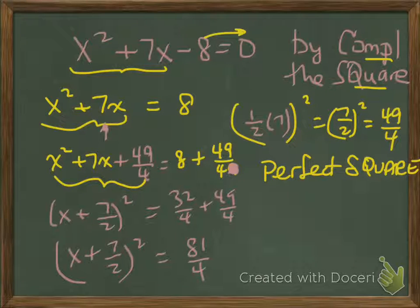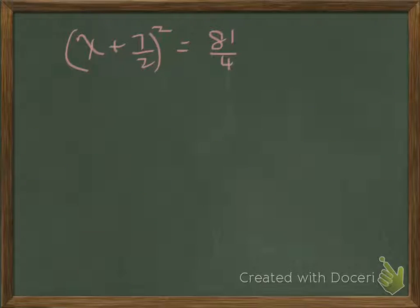So, carrying on from here. We now want to solve for x, and it's inside this term that is squared, so we want to eliminate the square power by taking the square root of both sides.